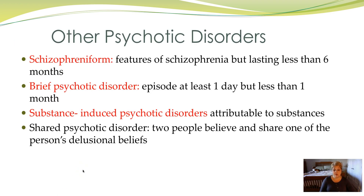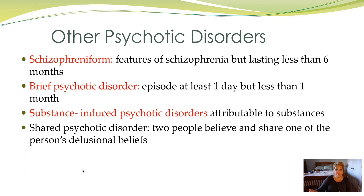Other psychotic disorders: schizophreniform has features of schizophrenia but lasts less than six months. Brief psychotic disorders are episodes lasting at least one day but less than a month. Substance-induced psychotic disorders are attributed to substance misuse. Shared psychotic disorder is extremely rare. Substance-induced psychotic disorders will be covered more in the substance abuse section. What is important to know is that when dealing with psychosis, get a thorough history of prescribed medications, street drugs, illegal substances, and herbal substances to rule out substance-induced psychosis — these are among the easiest to treat, because stopping the substance often clears the psychosis.